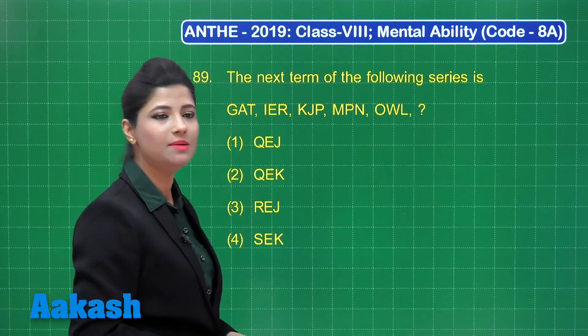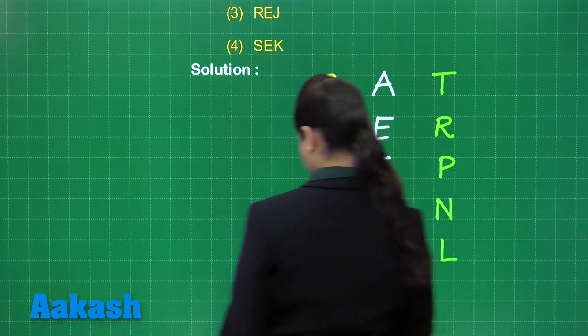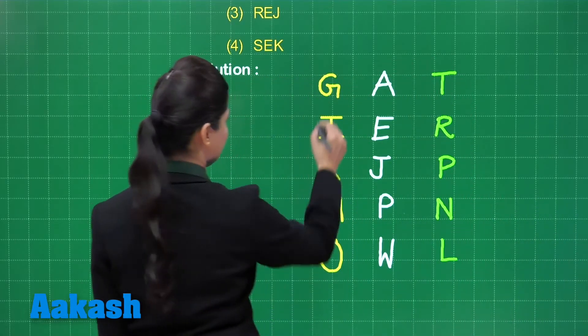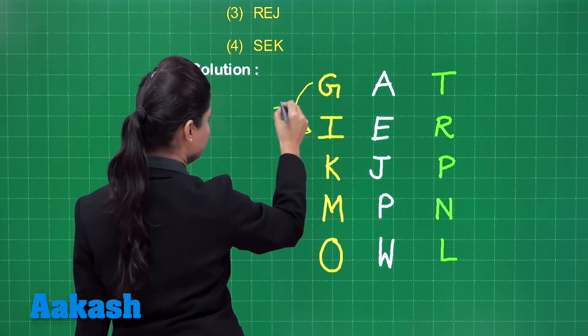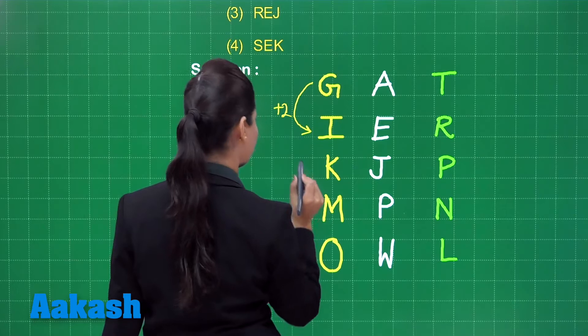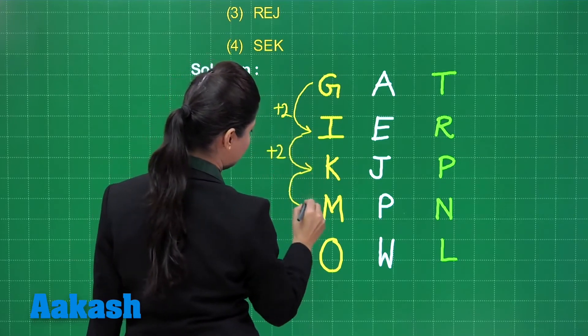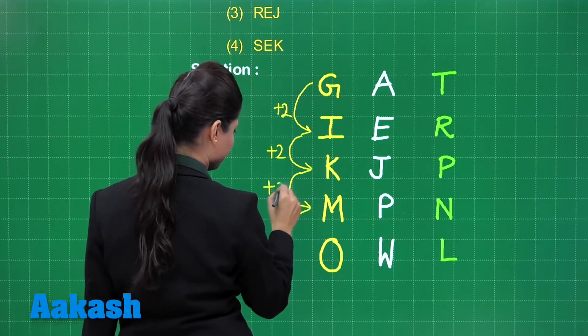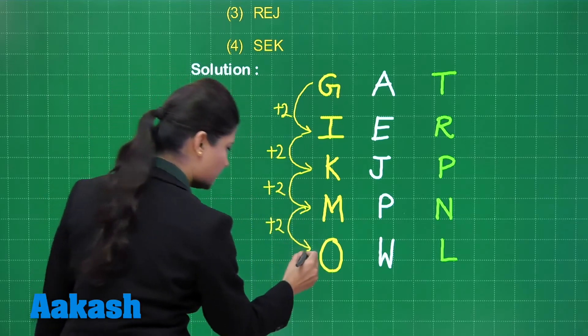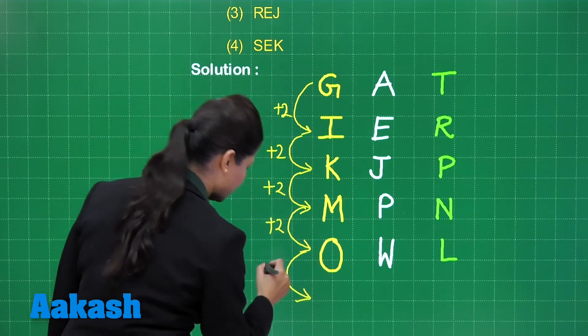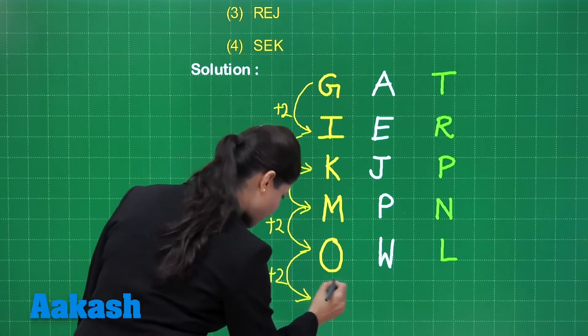Let's try to decode the pattern here. If I write these terms here, let's try to decode the pattern first. For the first letter, you move two alphabets ahead. You reach to I, then GHI, then IJK. That is basically moving two alphabets ahead. Then KLM, similar manner, MNO. So after O, it should be possibly equal to OPQ. So here we need the alphabet Q.